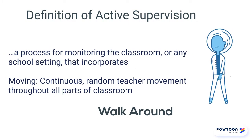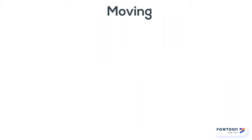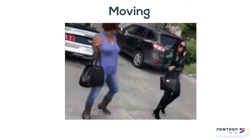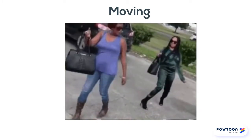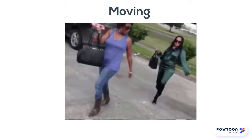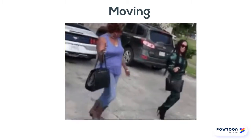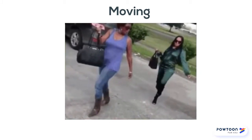Employing active supervision also includes moving — continuous random teacher movement throughout all parts of the classroom. When you are using movement, circulate among the students to supervise. Use continuous movement, make use of proximity with students, and make your movements random or unpredictable.